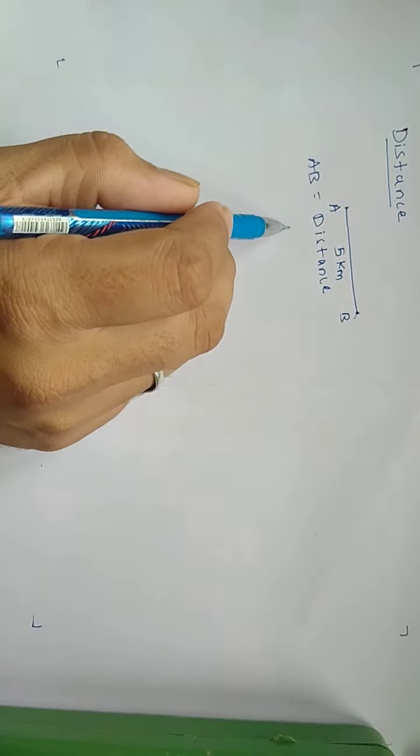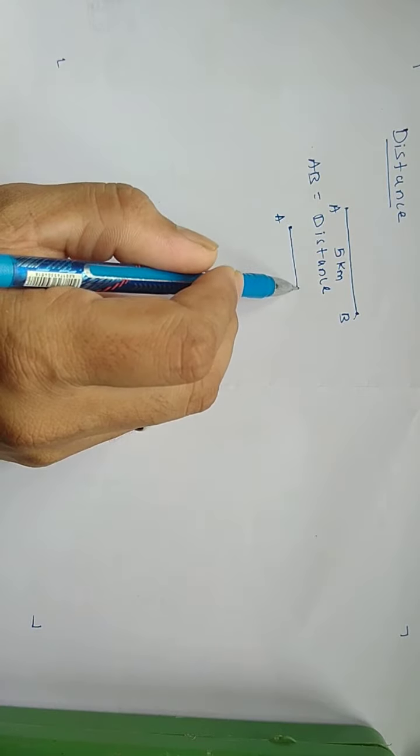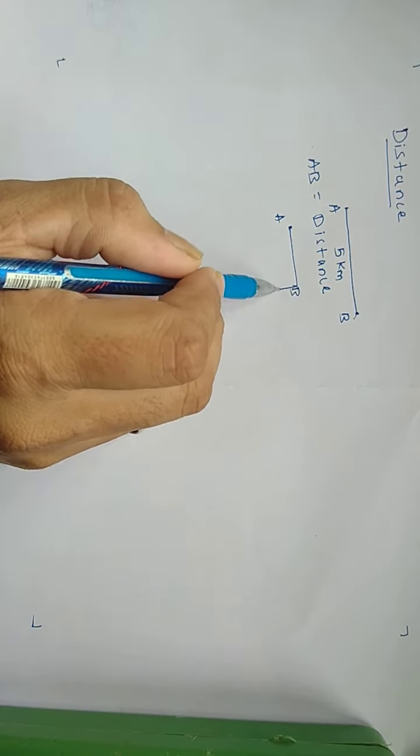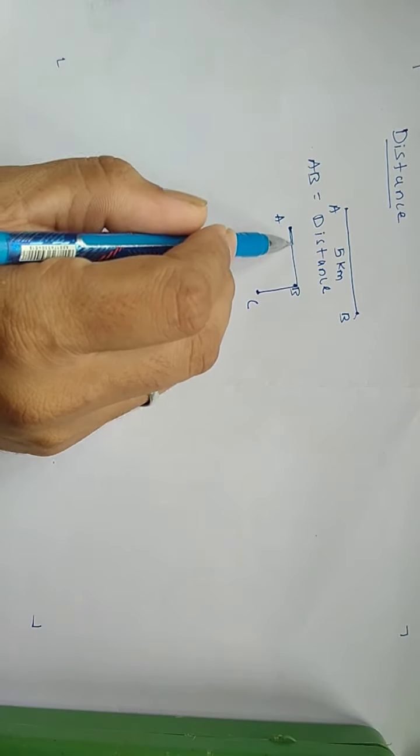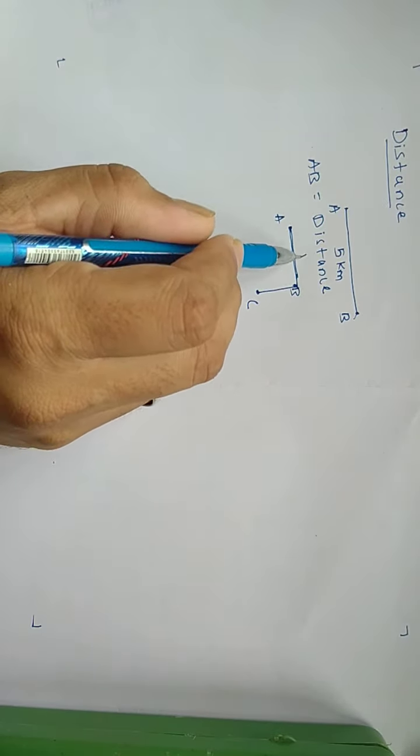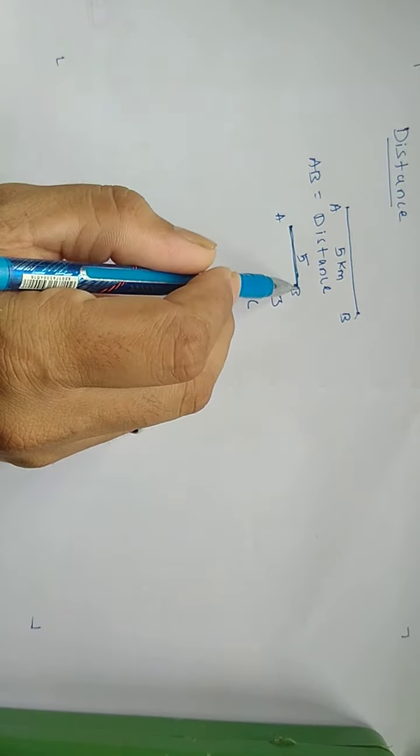Now suppose we take point A. A person goes from point A to B, then comes to position C. Suppose this is 5 km, and this is 3 km.